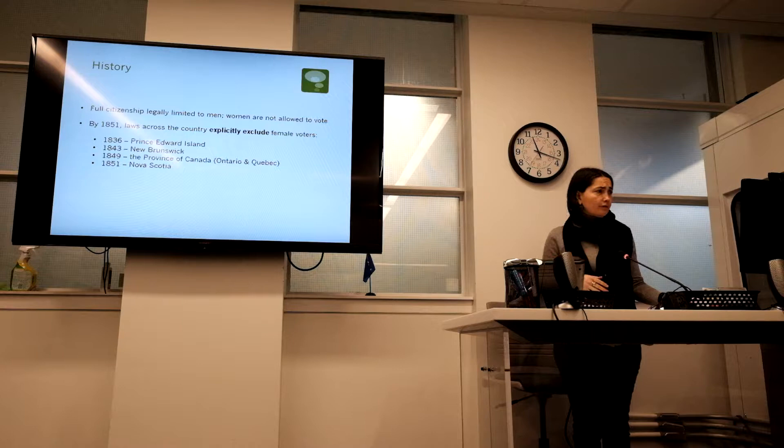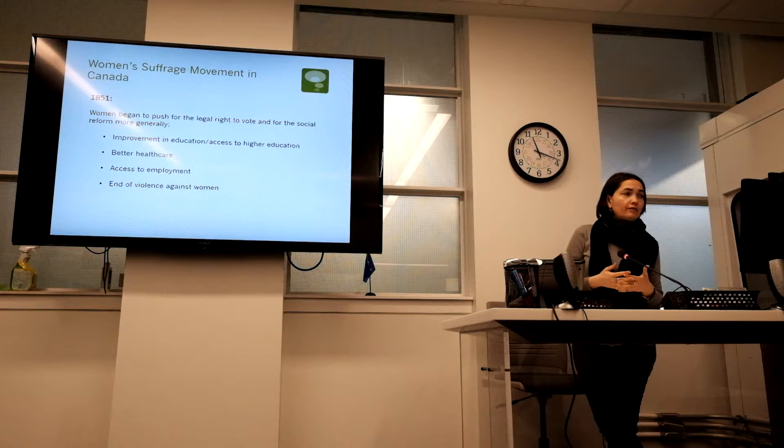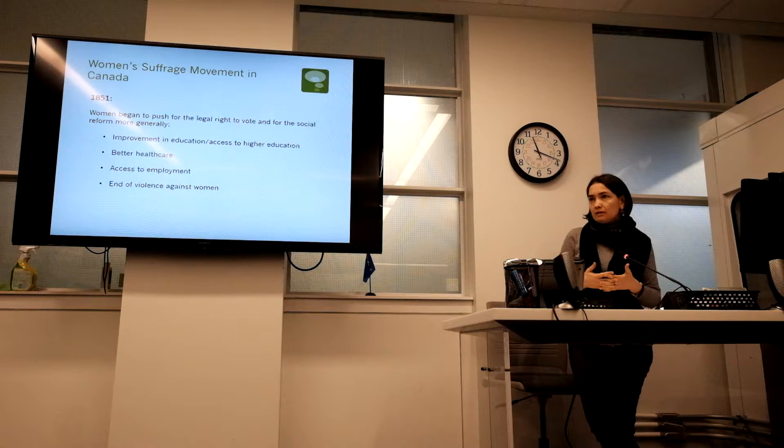Around 1851, women began to push for the legal right to vote and for social reform more generally — for improvement in education and access to higher education for women, for better healthcare, for access to employment and better conditions for employed women, and to end violence against women.